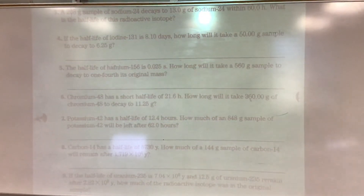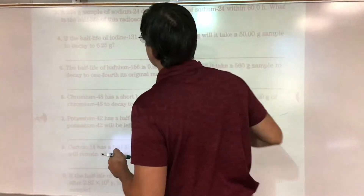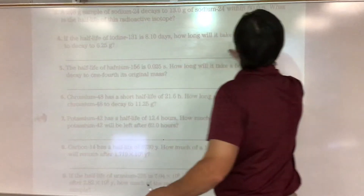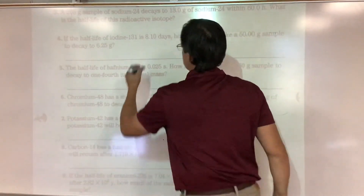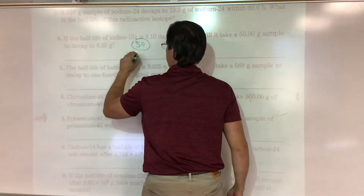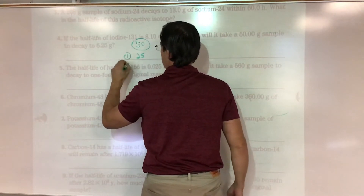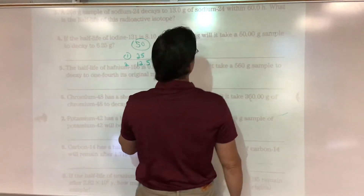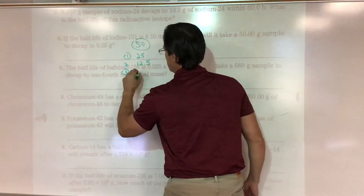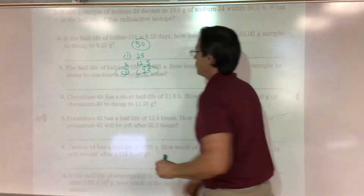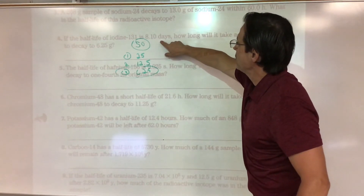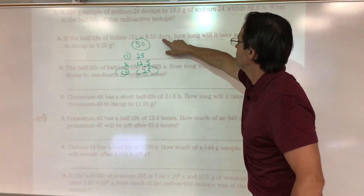Number four: iodine-131 has a half-life of 8.1 days. How long will it take for 50 grams to decay to 6.25 grams? One half-life is 25, two half-lives is 12.5, three half-lives is 6.25 — so that's three half-lives.